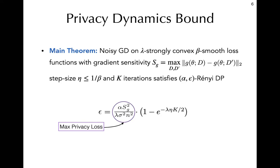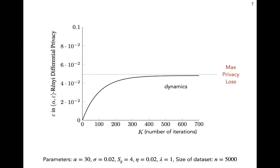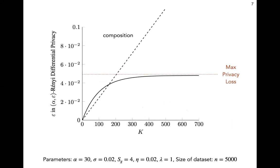This convergence of privacy loss is exponential, and interestingly, its rate only depends on the strong convexity parameter of the loss function and the product between step size and number of iterations. We plot the privacy loss for one particular setup of parameters, and we see that it nicely converges to a constant bound. In contrast, the composition-based bound linearly accumulates with k and quickly exceeds the maximum privacy loss.